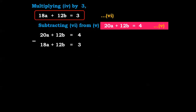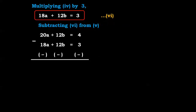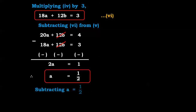You have to subtract, meaning the sign of the second equation will get changed — plus becomes minus. So plus 12b minus 12b cancel. 20a minus 18a gives 2a. 4 minus 3 gives 1. Therefore a equals 1 upon 2.